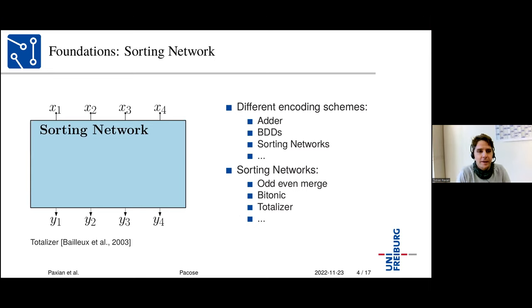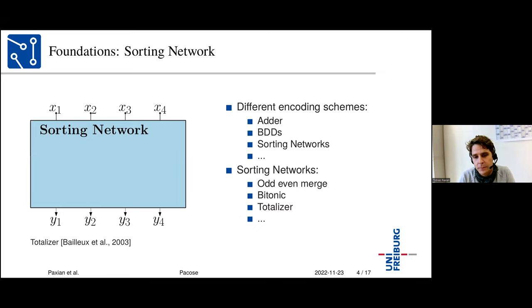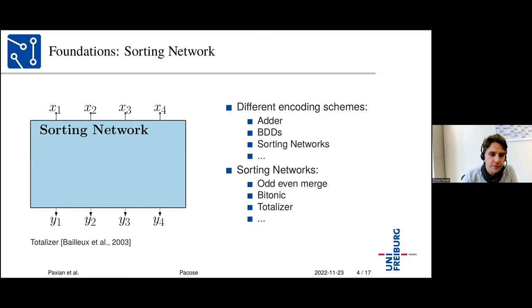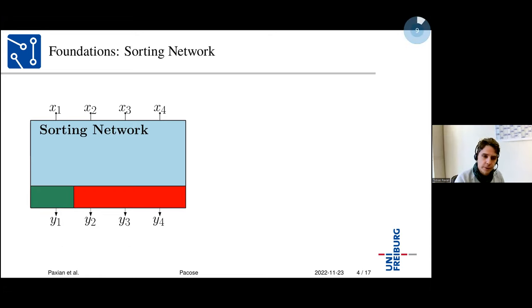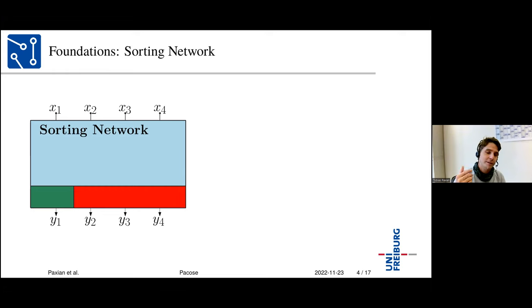An introduction to sorting networks and totalizers is needed since the encoding is based on them. There are different encoding schemes for pseudoboolean MaxSat solving: adders, BDDs, or sorting networks, including merge sorters and bitonic sorters. A totalizer is not strictly a sorting network, but can be used like one and can be exchanged for any sorting network in the encoding. The inputs X1 to X4 are the relaxation literals, and the goal is to negate as many as possible to satisfy as many soft clauses as possible.